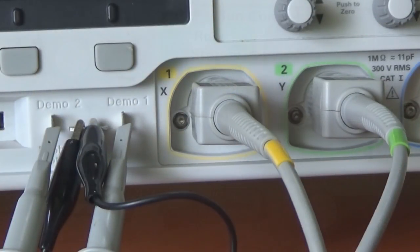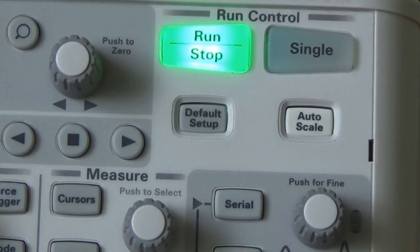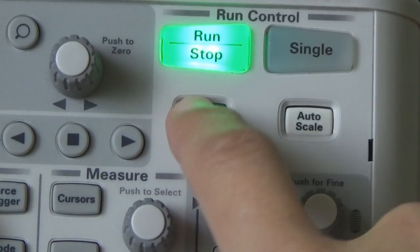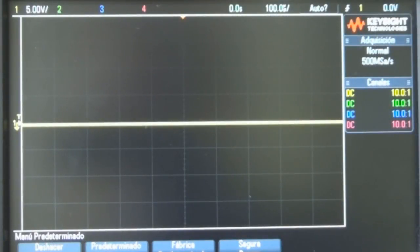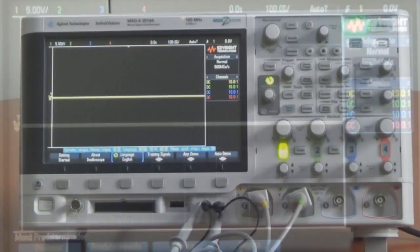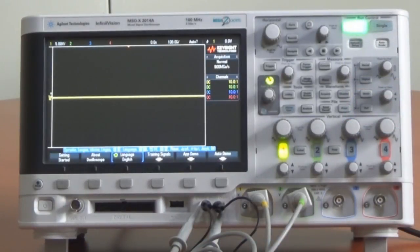Ahora presionaremos la tecla de Default Setup cerca de la parte superior derecha del panel frontal. La tecla de Default Setup hará que el osciloscopio funcione de acuerdo a la configuración predeterminada de fábrica. No sólo configurará los factores de escala X y Y del osciloscopio a los valores preestablecidos, sino que también apagará cualquier modo especial de operación que alguno de sus compañeros de estudio pueda haber usado.